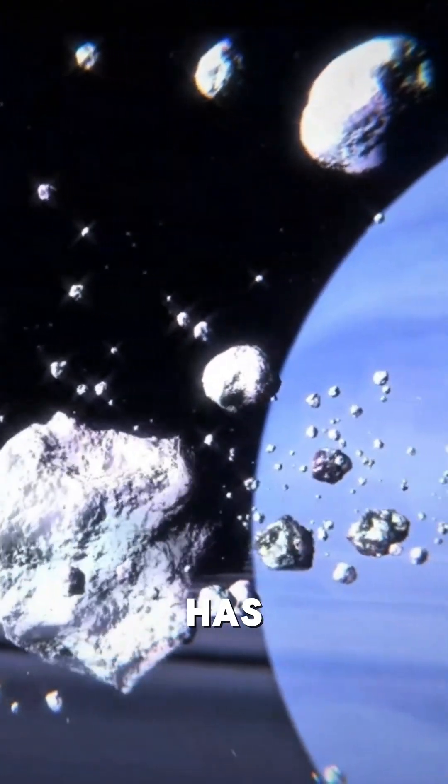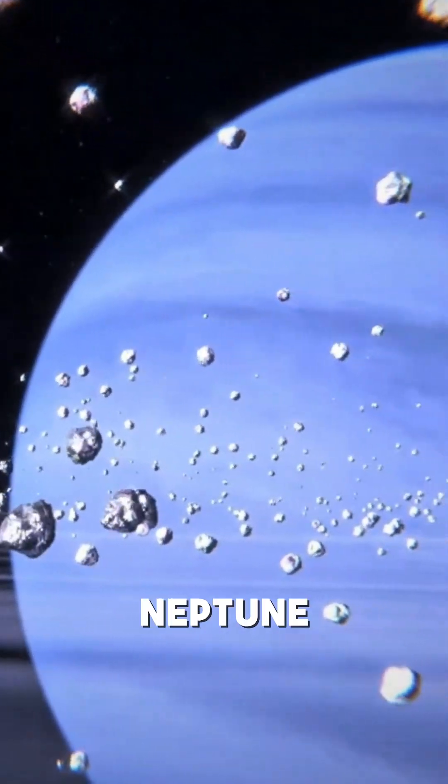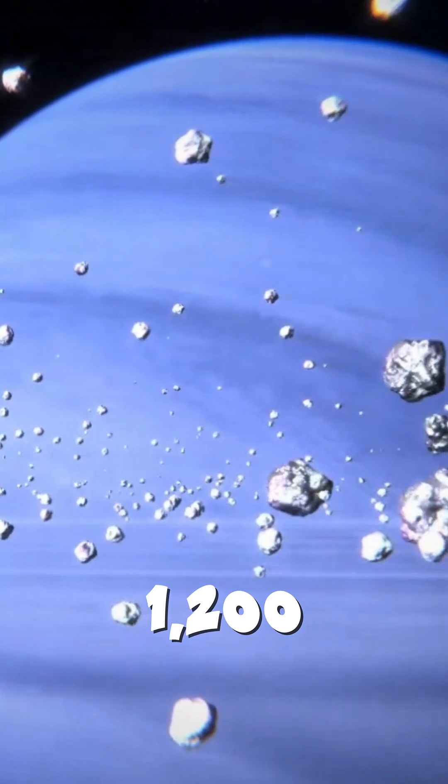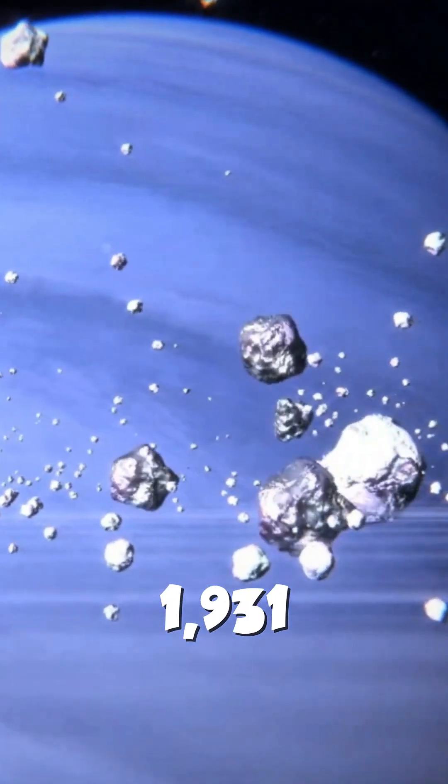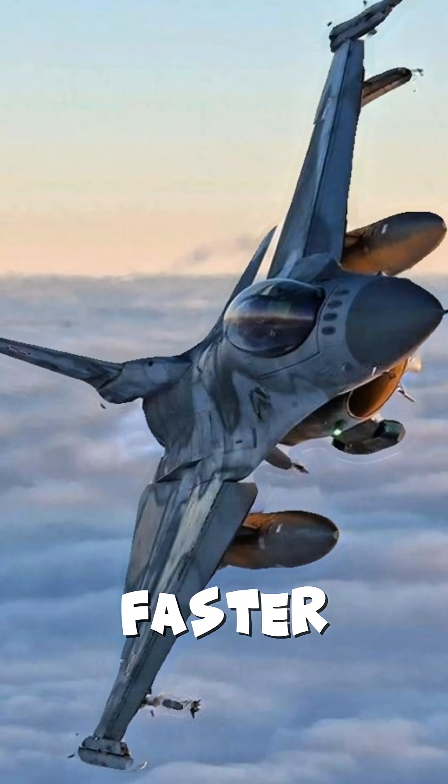Number 4. Neptune has supersonic winds. Winds on Neptune reach speeds of over 1,200 miles per hour, 1,931 kilometers per hour, faster than a jet.